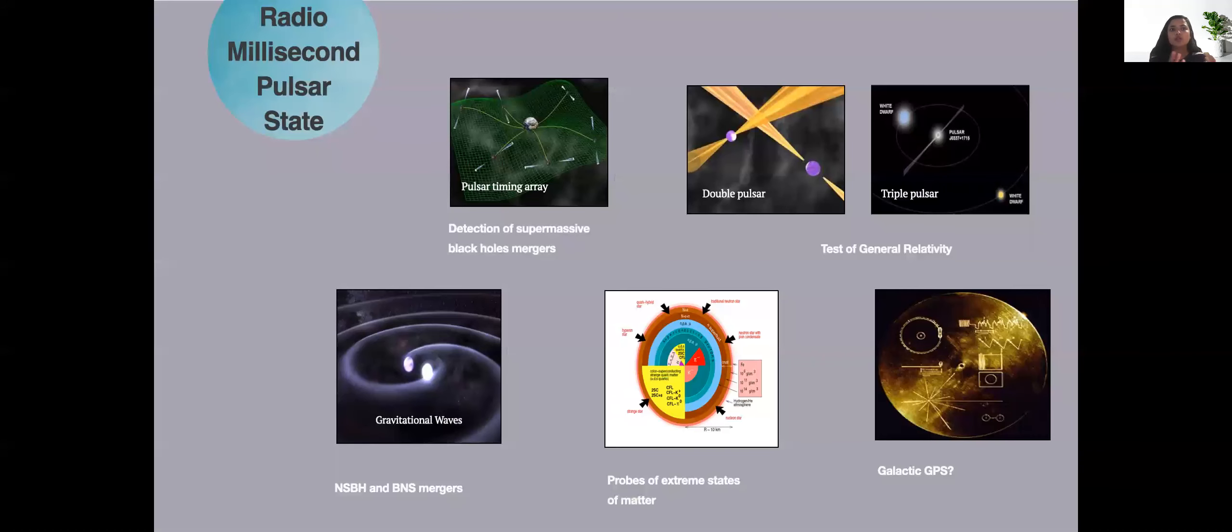Millisecond pulsars are really cool objects because they have multiple applications. For example we can use pulsar timing array to study and detect supermassive black hole mergers. We can use double pulsar and exotic triple pulsar systems to test general relativity in some of the strongest gravity regimes.